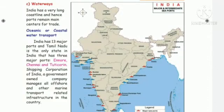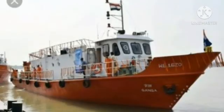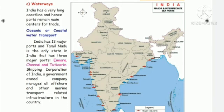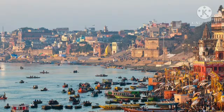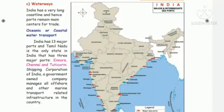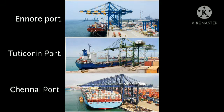Now start waterways. India has a very long coastal line and hence ports remain main centers for trade. Coastal water transport means transport over the sea. India has 30 major ports and Tamil Nadu is the only state in India that has three major ports: Ennur, Chennai and Tuticorin.